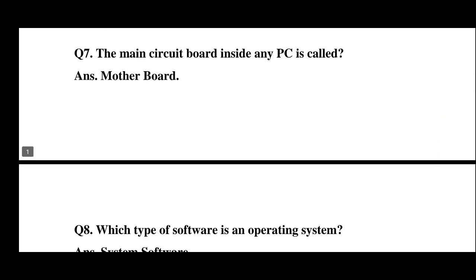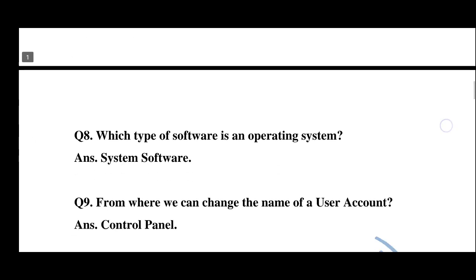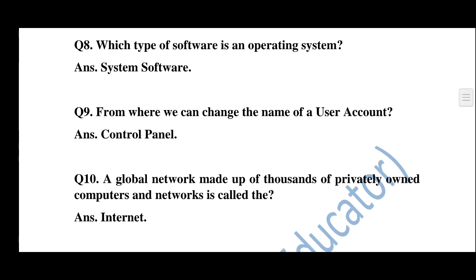Question 7: The main circuit board in any PC is called? Answer: Motherboard. PC means Personal Computer. Question 8: Which type of software is an operating system? Answer: System Software. Question 9: From where can we change the name of a user account? Answer: Control Panel. Question 10: A global network made up of thousands of privately owned computers and networks is called? Answer: Internet.